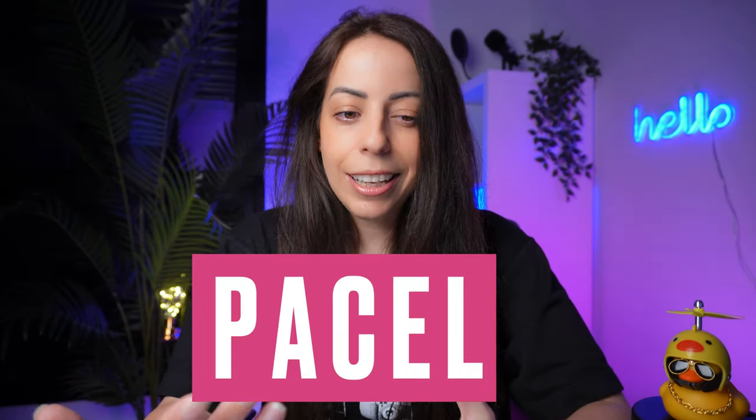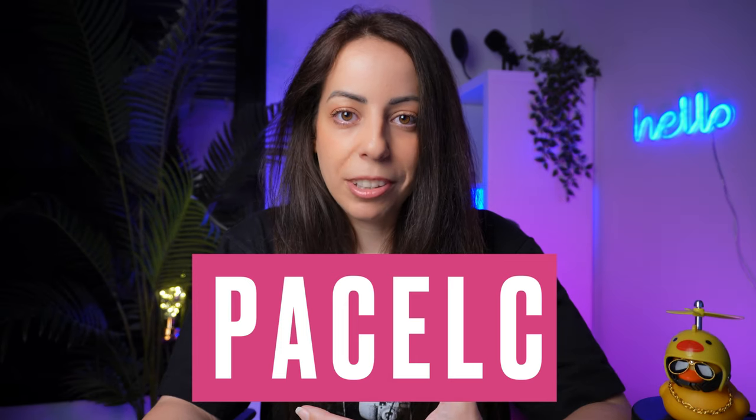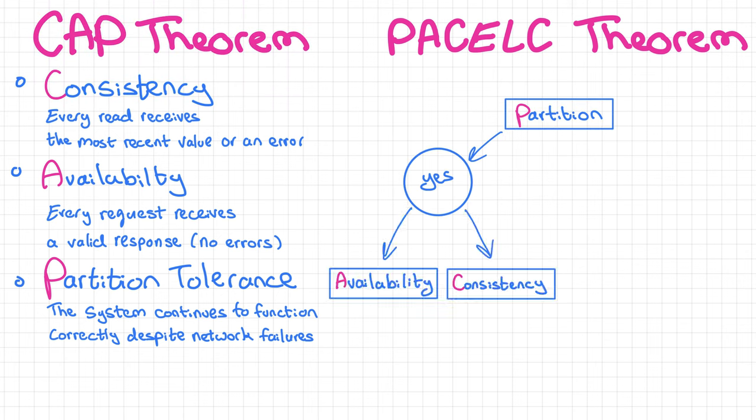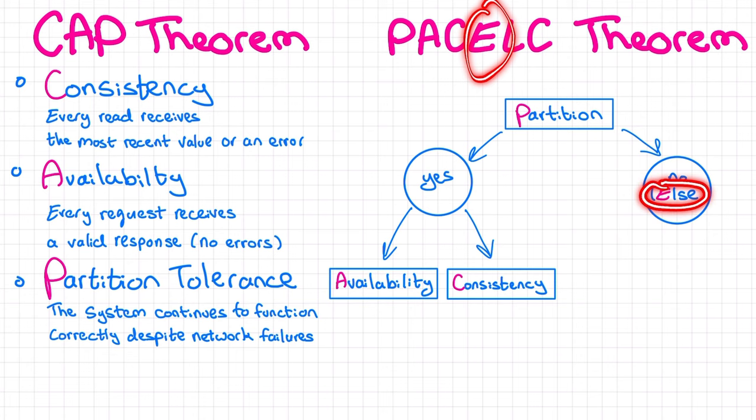There's also a kind of complementary theorem called PACELC. Maybe there's a way to pronounce this as a word, I don't know. But anyways, just like Brewer's CAP theorem, it states that if there is a partition, we must trade off between availability and consistency, but then it goes further and explains what should happen in a normal state when there isn't a partition. So the E is for else, when there is no partition.